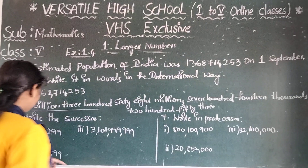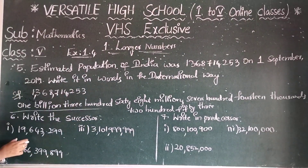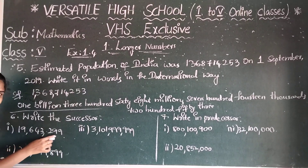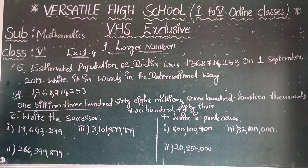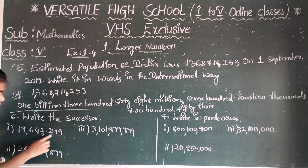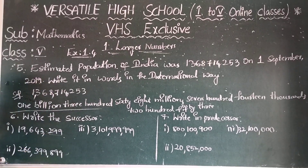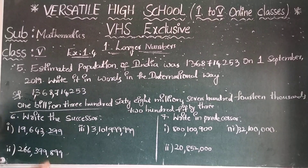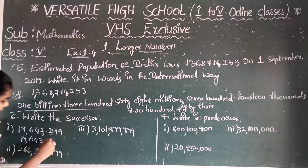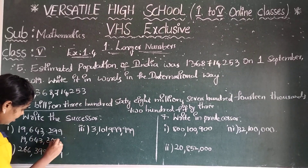The first number is 19,643,299. Write the successor of this number. Successor means the number after. Look at the last digits: 299. After 299 comes 300. So 19,643,300 is the answer.